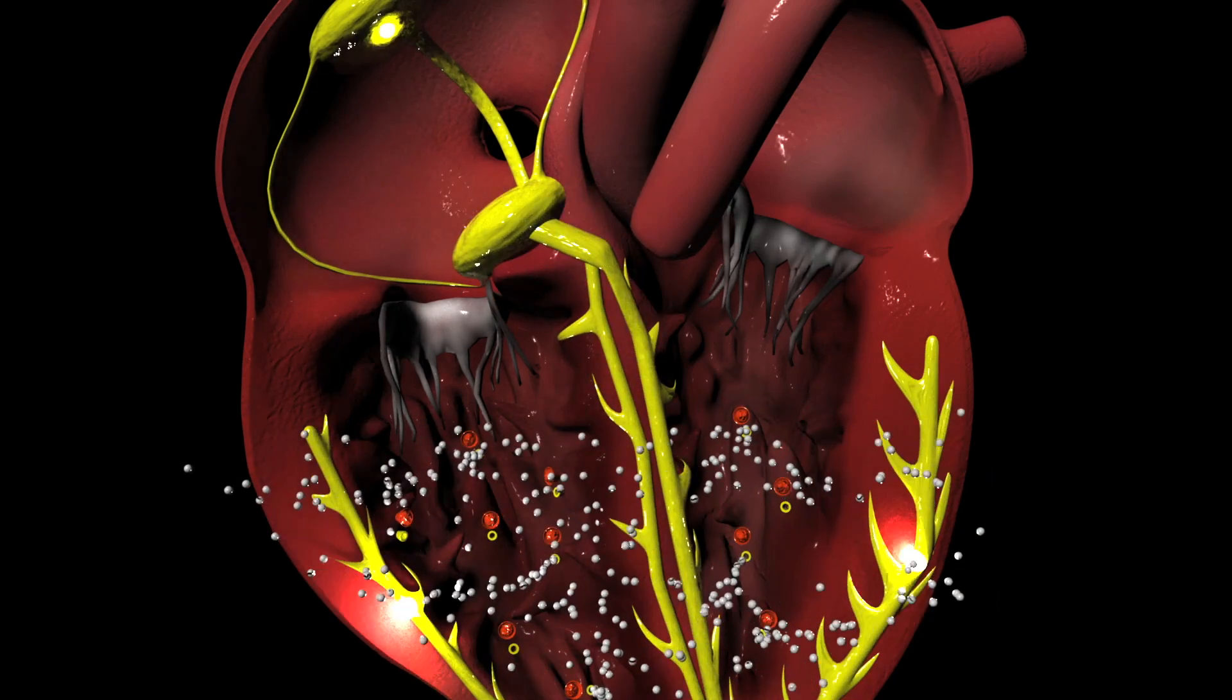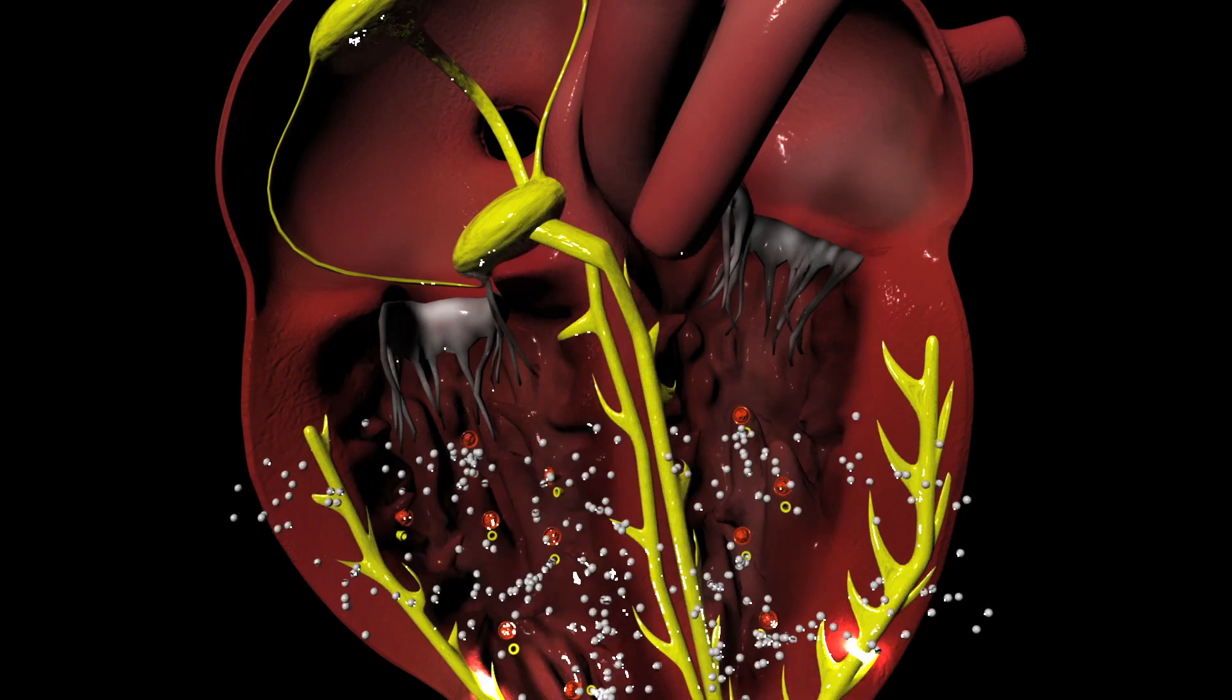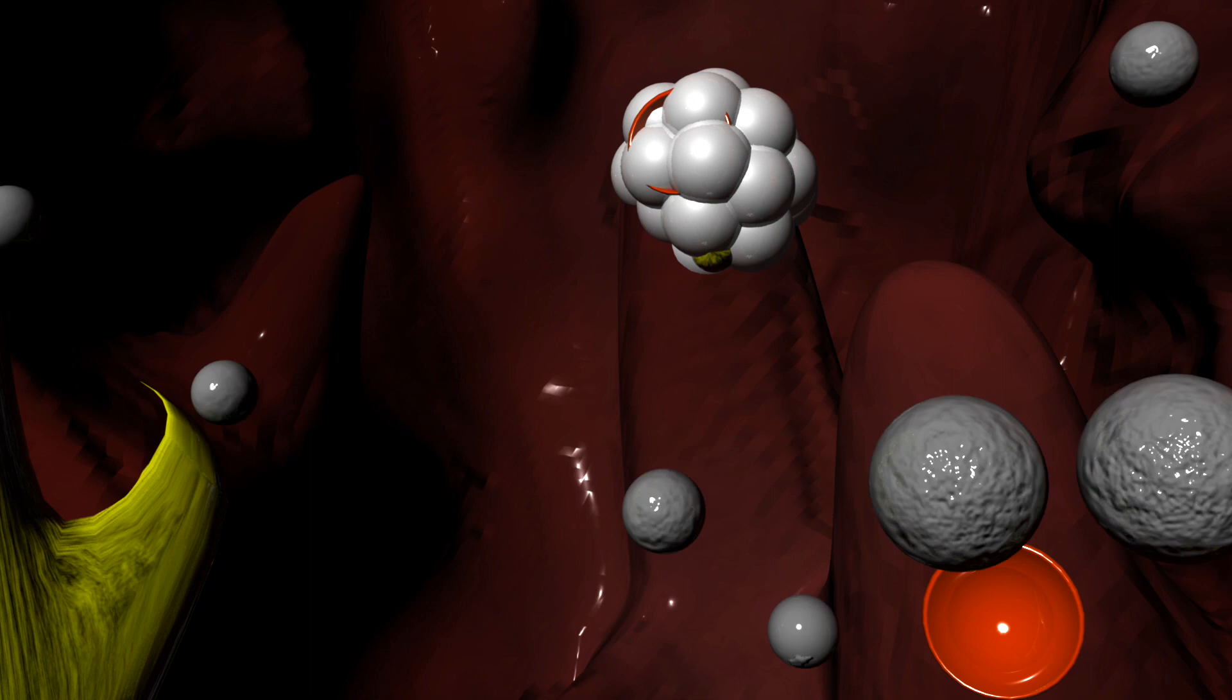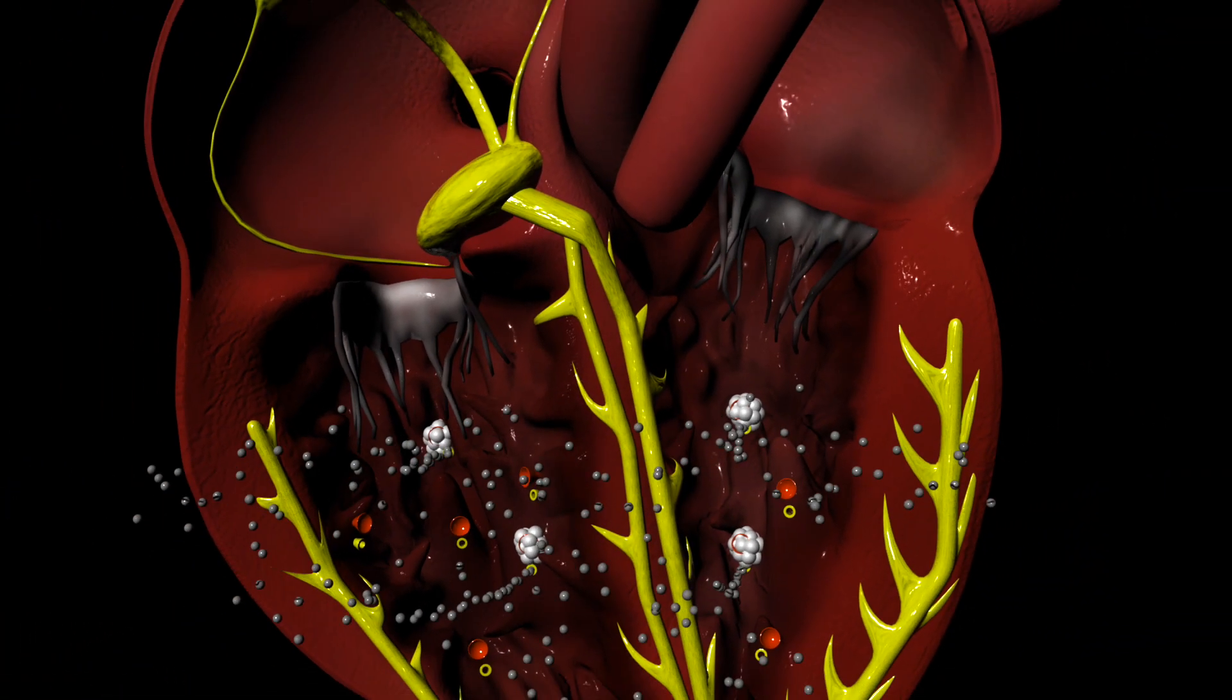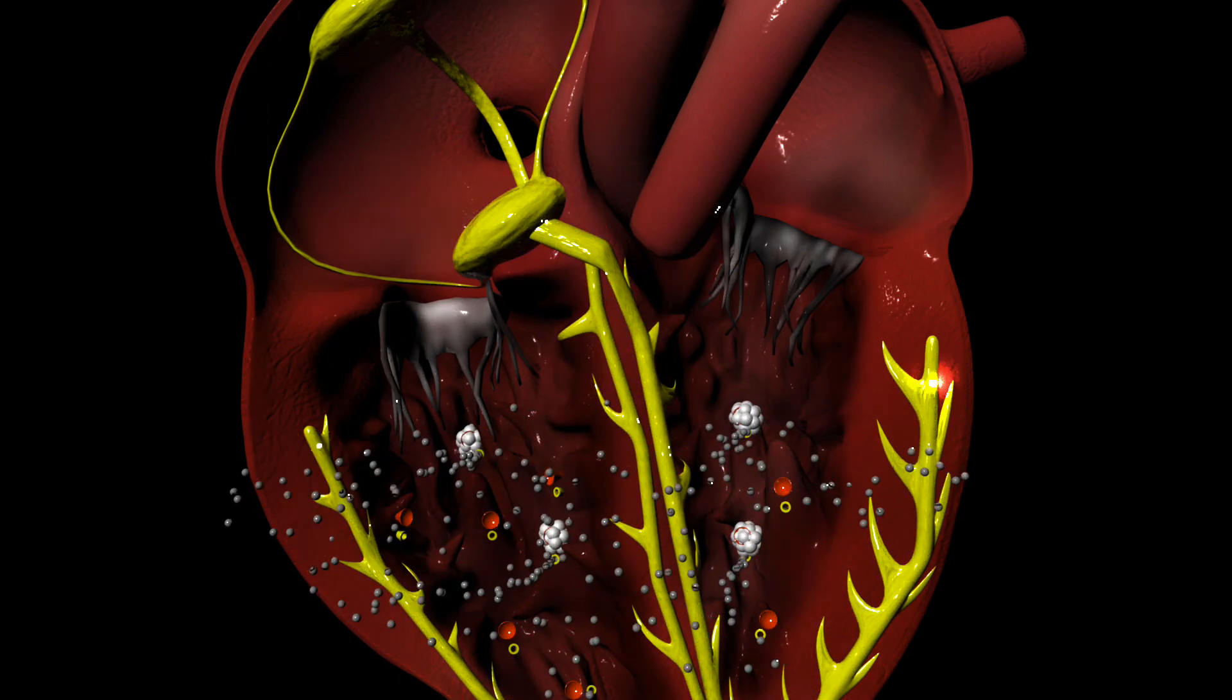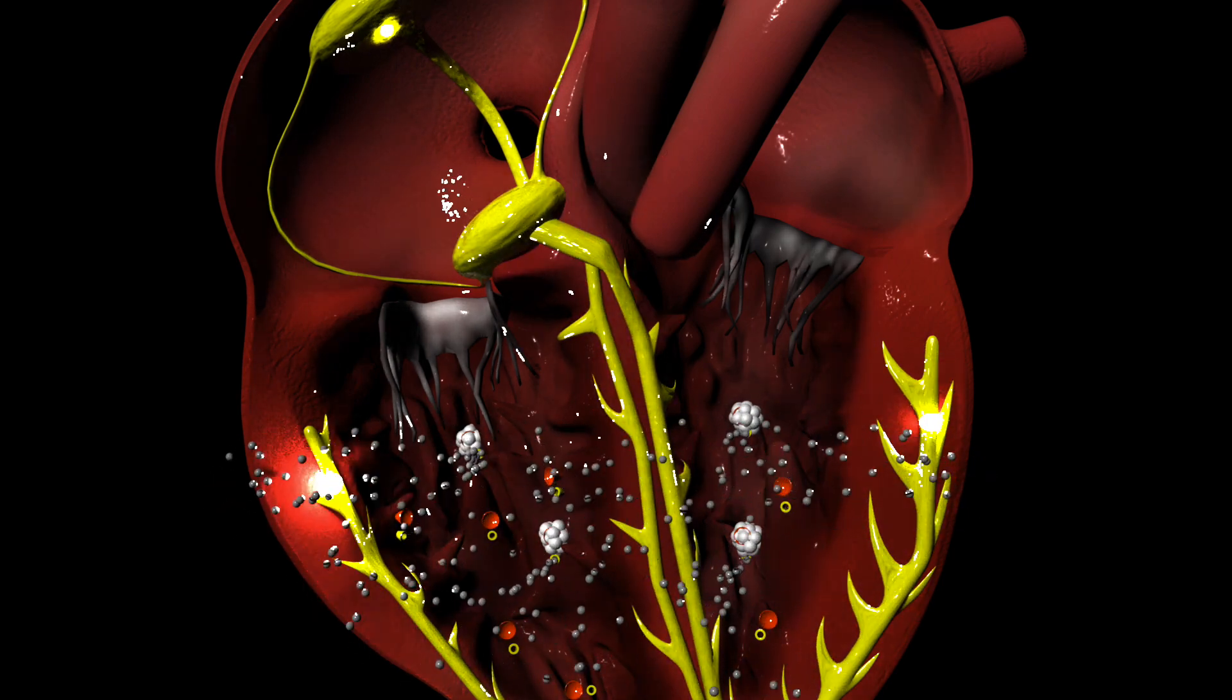Induction of this system by adrenergic neurotransmitters allows the firing of the electrical system to speed up. Due to the emergency of the cardiac arrest, we can give synthetic analogs of adrenergic neurotransmitters to mimic the endogenous neurotransmitters. They bind and react similarly to the endogenous neurotransmitters.